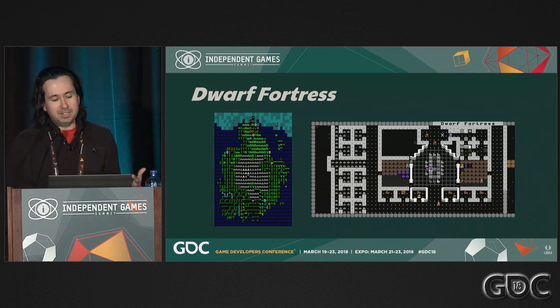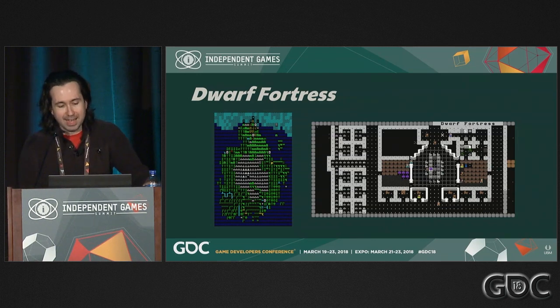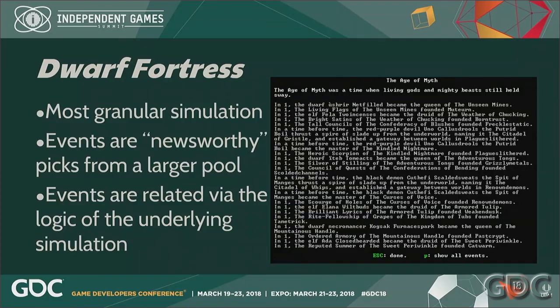The canonical example of procedural history generation is Taran and Zack Adams' dwarf settlement management game Dwarf Fortress. It's really the most granular simulation — happening at the level of individual dwarves and deep physical simulations, combining to give emergent history. There's Dwarf Fortress's Legends mode, where you can generate a world and just read the annals — the record of the history. Their system is interesting because events are these newsworthy events chosen from a larger pool. A dwarf goes about his life, the simulation runs, and when the system flags something as newsworthy, it gets logged in the history chronicle — that's what you see in Legends mode.